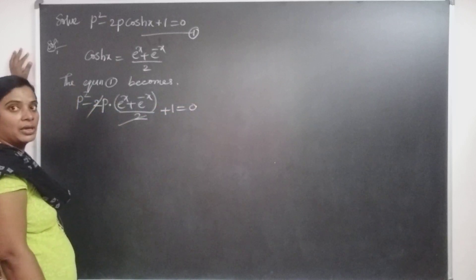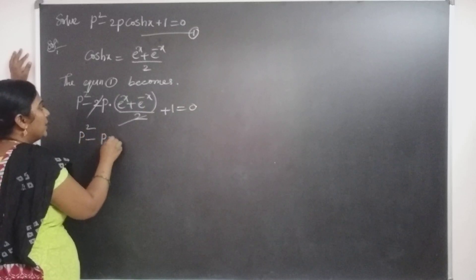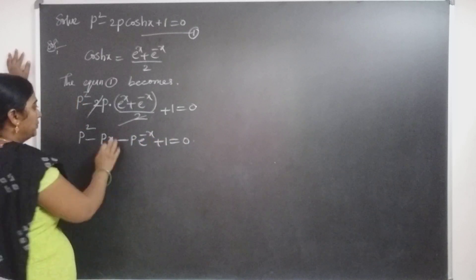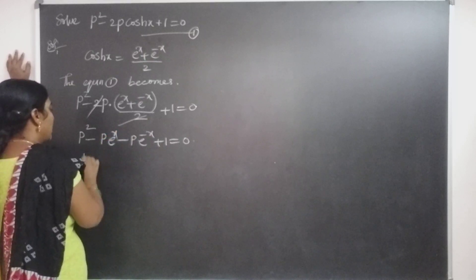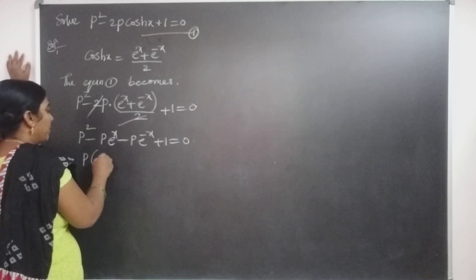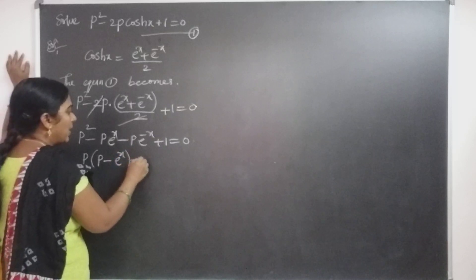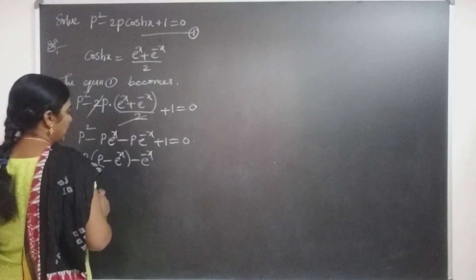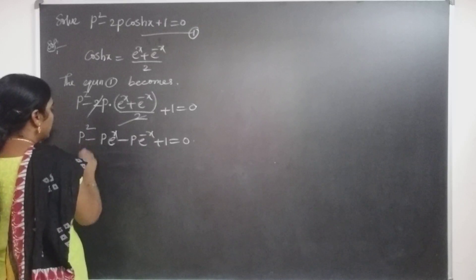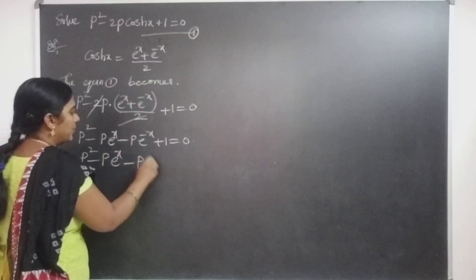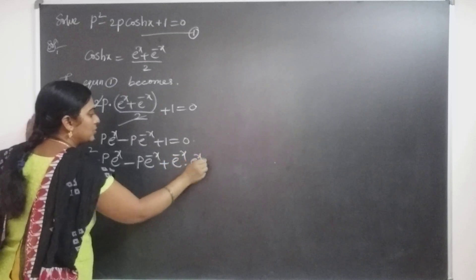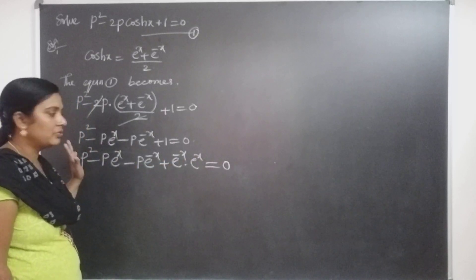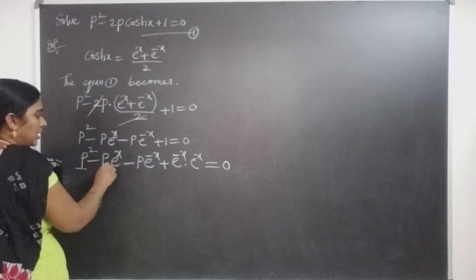The 2's cancel, giving: p² - p·eˣ - p·e⁻ˣ + 1 = 0. We can write the 1 in the last term as e⁻ˣ · eˣ, since e⁻ˣ⁺ˣ = e⁰ = 1. So the equation becomes: p² - p·eˣ - p·e⁻ˣ + e⁻ˣ·eˣ = 0.